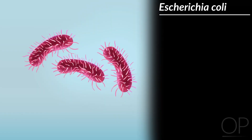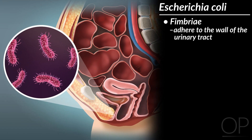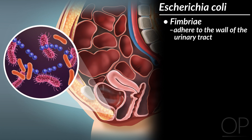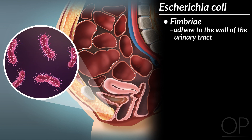Most UTIs are caused by Escherichia coli, or E. coli. It has a variety of virulence factors that make it a powerful uropathogen, including fimbriae, or finger-like projections that allow it to adhere to the wall of the urinary tract. Many other bacteria are washed away by the normal flow of urine, but uropathogenic E. coli remains, grows, and ascends.